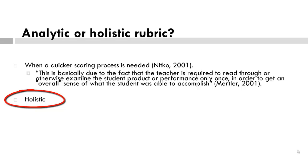Using the portfolio example again, if we had five different criteria, we would more than likely have to go through the portfolio five different times to ensure we have accurately and fairly assessed the five different criteria. This would be extremely time consuming. Besides, what five criteria would you select in a project that might vary considerably from student to student? We will look at this in the next video.